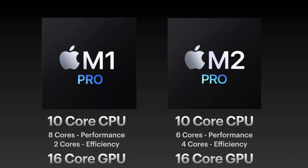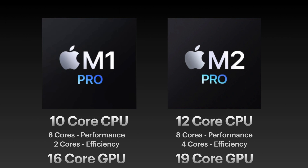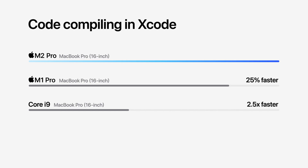The M1 Pro with the 10-core CPU came with a 16-core GPU, and the M2 Pro with 10-core CPU also comes with a 16-core GPU. However, looking at the 12-core CPU model of the M2 Pro, it offers 8 performance cores and 4 efficiency cores compared to 2 efficiency cores in the M1 Pro. For the GPU, the M2 Pro comes with 3 extra cores, giving it 19 cores of GPU total.